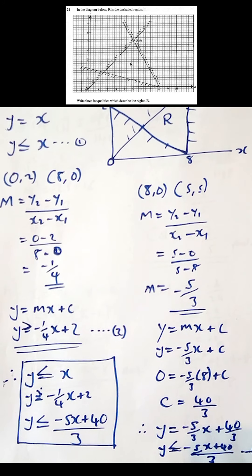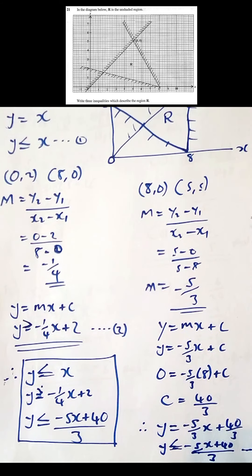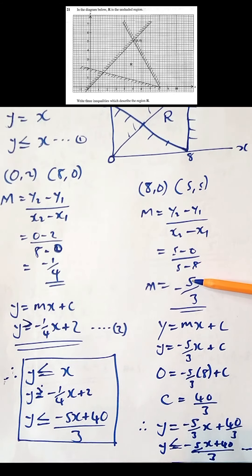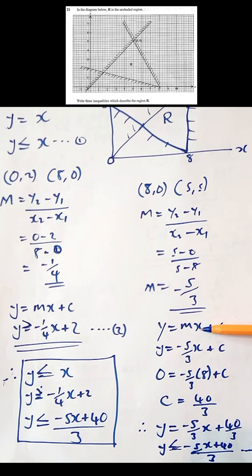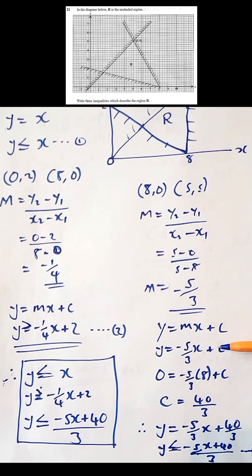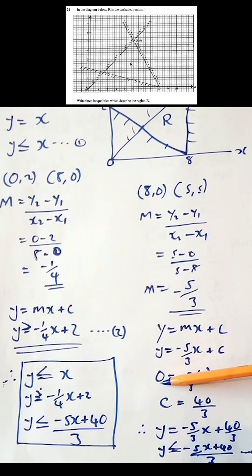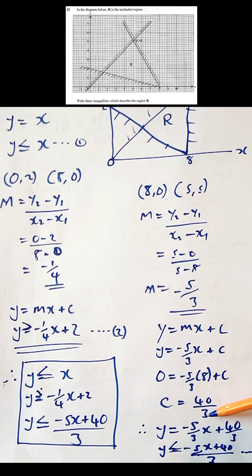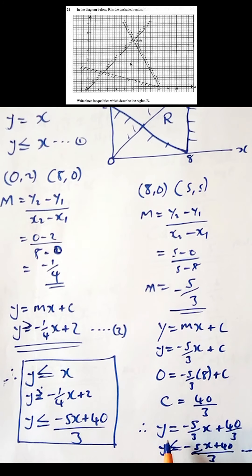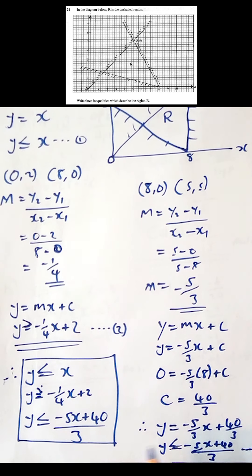The third line has points (8, 0) and (5, 5). We find the gradient to be -5/3. Substituting into y = mx + c and using coordinate (8, 0) to solve for c, we get c = 40/3. So the equation is y = -5/3 x + 40/3. We now replace the equal sign with the appropriate inequality symbol.